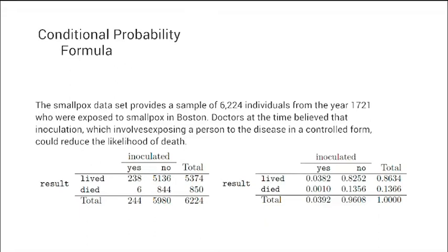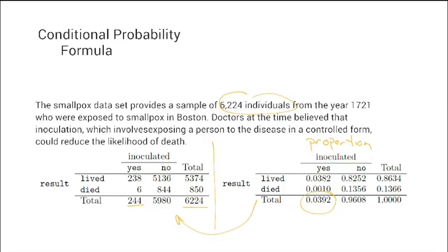The smallpox dataset provides a sample of 6,224 individuals from 1721 Boston who were exposed to smallpox. Doctors believed that inoculation — exposing a person to the disease in a controlled form — could reduce the likelihood of death. There are two data tables: one with raw numbers and one with proportions. To get proportions, divide each raw number by 6,224; for example, 244 ÷ 6,224 = 0.0392.